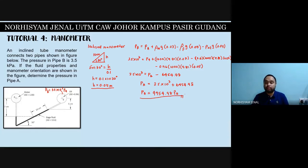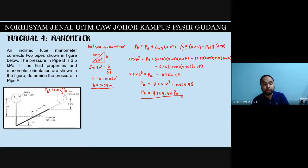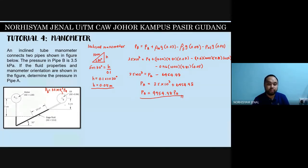Remember: whenever you have a question like this, make sure the pressure is changed into units of pascal rather than kilopascal. Also, if you have an inclined manometer, make sure you convert the inclined length to get the vertical height, because manometer calculations require the vertical height rather than the inclined height. Doing this at the beginning makes it easier to substitute numbers into the calculation.